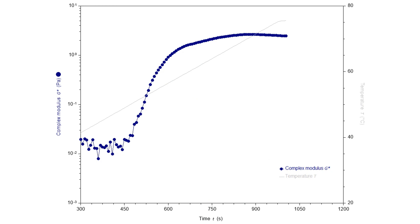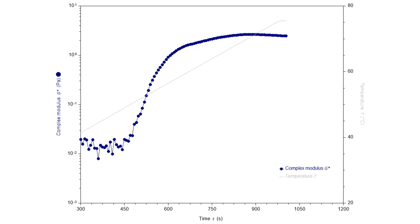Looking at the complex modulus of our sample as the hydroxy ethyl cellulose dissolves, the plot shows fairly noisy data at the start. This is just where we're oscillating both powder and water. After 450 seconds we see the complex modulus increase as the cellulose dissolves, indicating gelling.